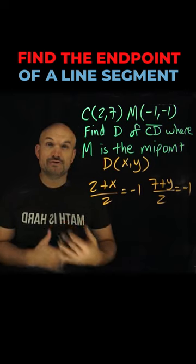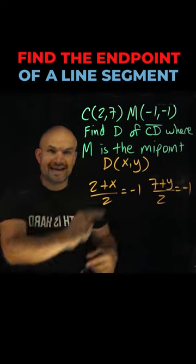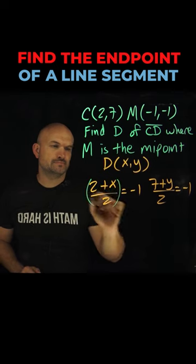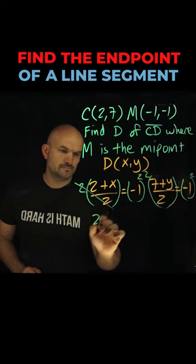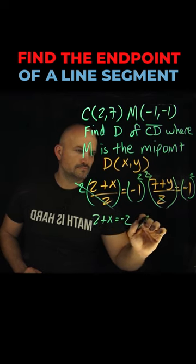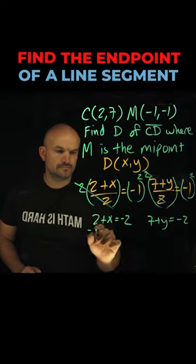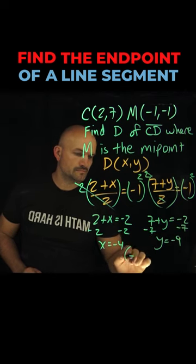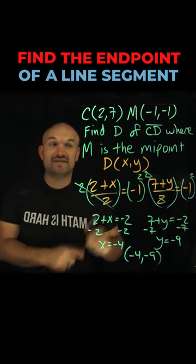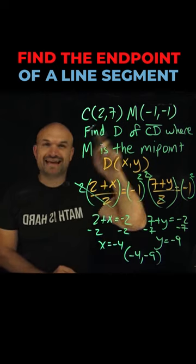Now all we simply need to do is use our inverse operations to solve for an x and solve for a y. Now we have found the other endpoint when given one endpoint and the midpoint.